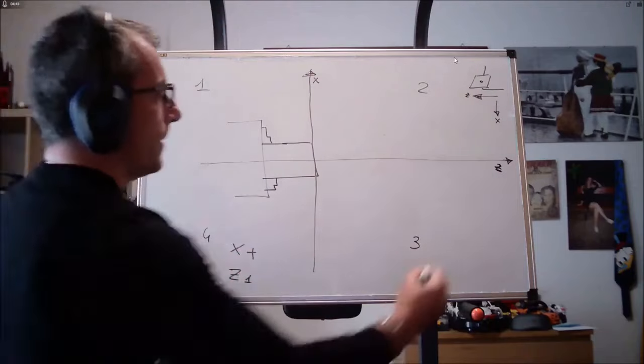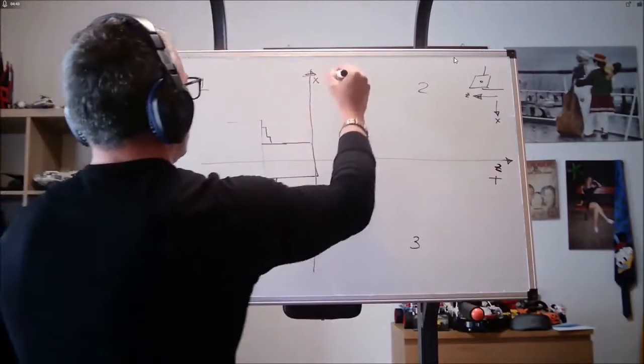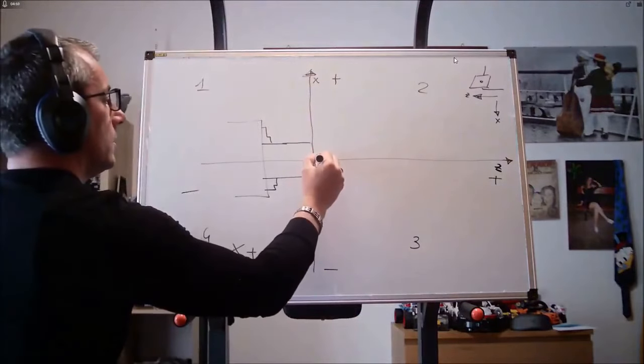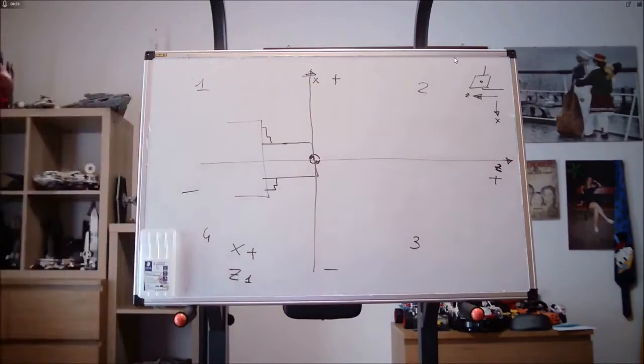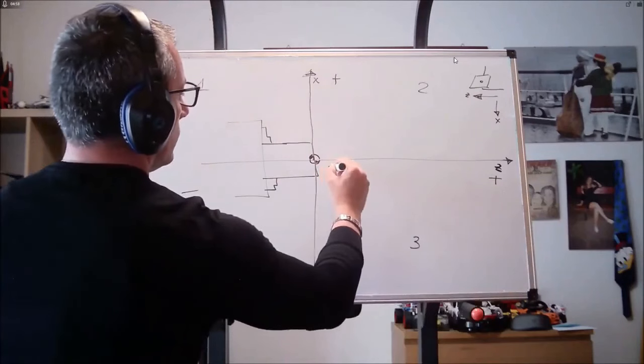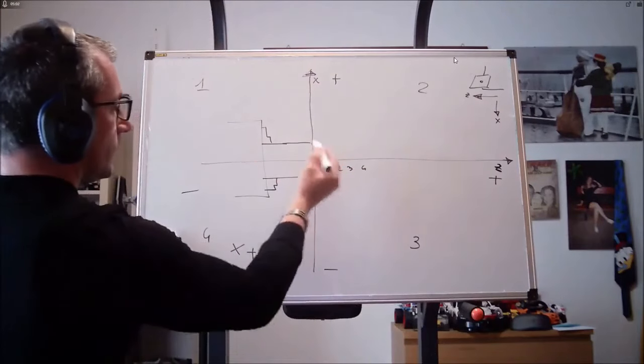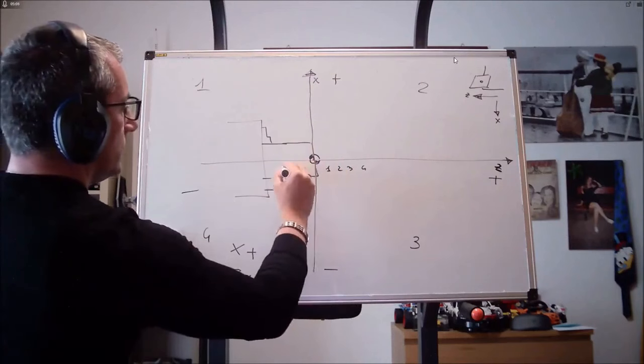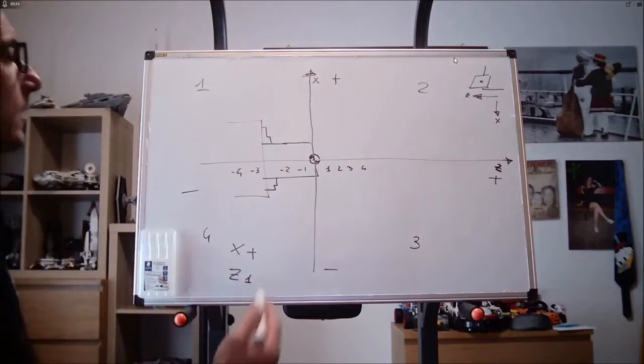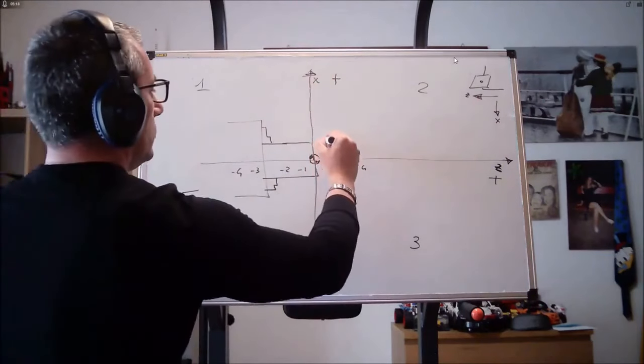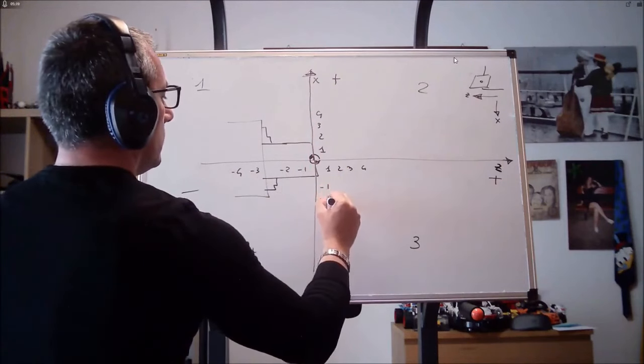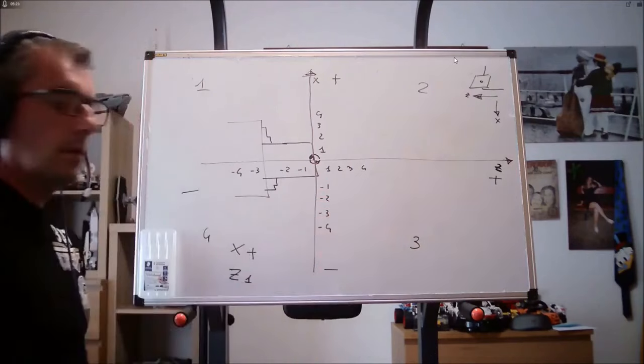Why is this? Because relative to the intersection, which we will call the origin of the two axes, the movements that go to the right in Z are positive, Z plus. So here we have one, two, three, four. To the left of the origin, the movements are negative. So we have minus one, minus two, minus three, minus four. The same goes for X. Relative to the origin and going upwards, we have one, two, three, four. Relative to the origin and downwards, we have minus one, minus two, minus three, and minus four.